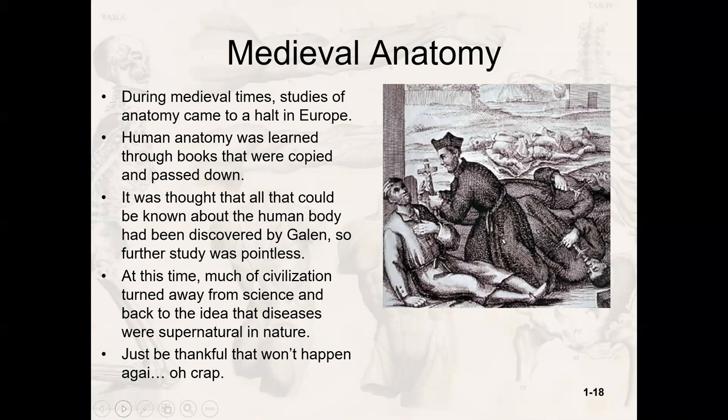Here's where stuff gets weird. During medieval times, we stopped studying. Galen had written things down, but without a printing press you had to copy it by hand in Latin. It was pretty much understood that everything that could be known about the body, Galen had figured out — so why bother? We turned away from science. A lot of people went back to the idea that diseases were supernatural. One of the plagues was considered to be both environmental and supernatural, and we had this general rejection of scientific thought, which set us really far back in terms of medical studies.